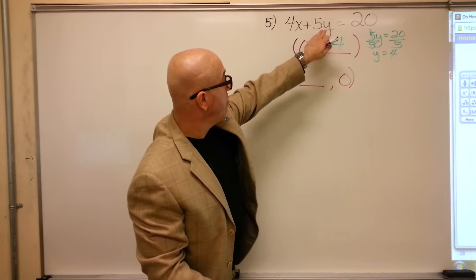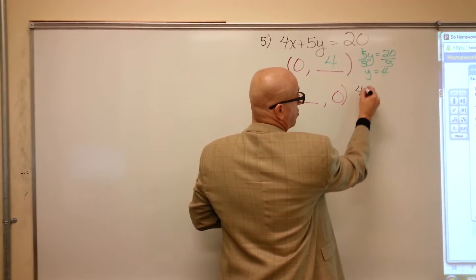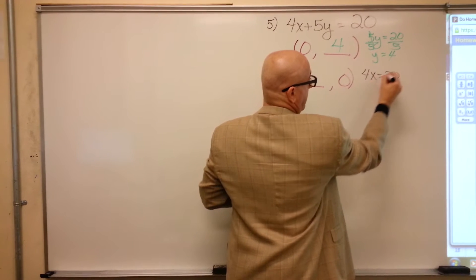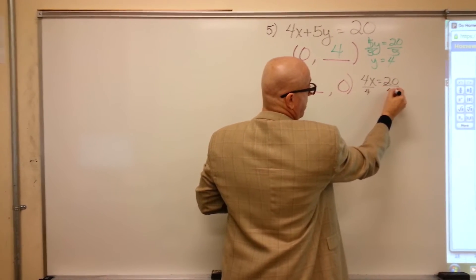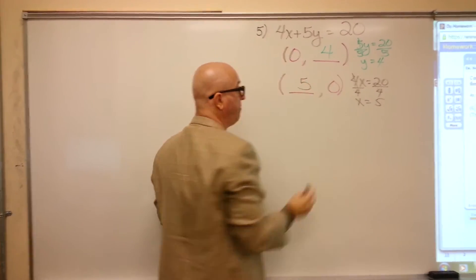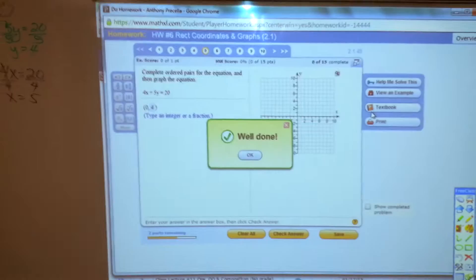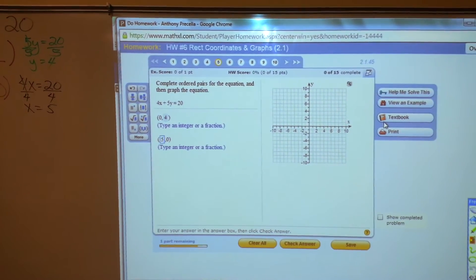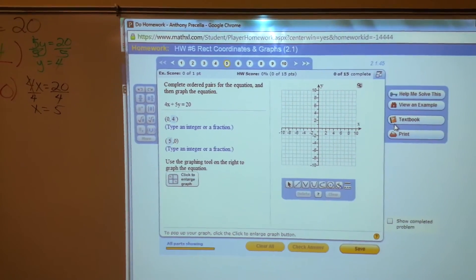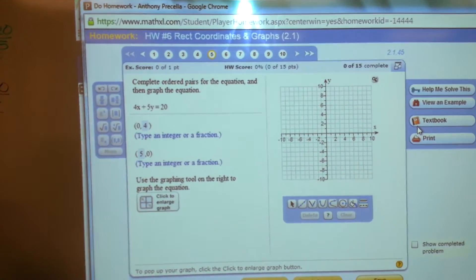Doing the same thing here, plugging a zero in for y, we would have 4x equals 20, divide by 4, to get x equals 5. So let's plug those in. 4, 5.